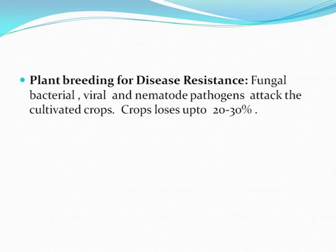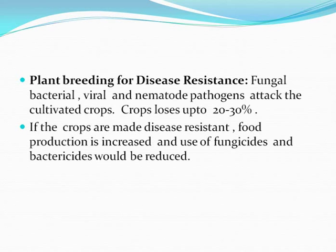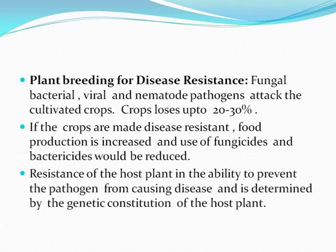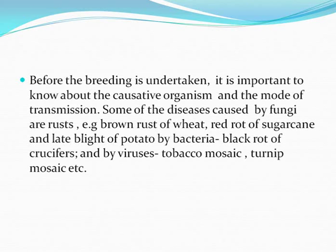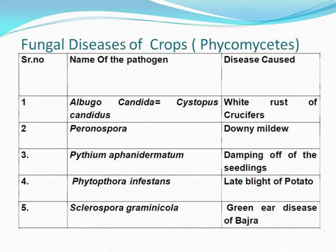Plant breeding for disease resistance: fungal, bacterial, viral, and nematode pathogens attack cultivated crops, causing up to 20–30% losses. If crops are made disease resistant, food production is increased and use of fungicides and bactericides is reduced. Resistance of the host plant is determined by the genetic constitution of the host. Before breeding is undertaken, it is important to know the causative organism, the disease, and the mode of transmission. Some diseases caused by fungi include rusts (e.g., brown rust of wheat), red rot of sugarcane, and late blight of potato. Bacterial diseases include black rot of crucifers; viral diseases include tobacco mosaic and turnip mosaic.